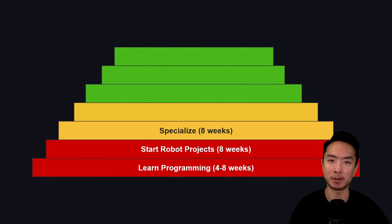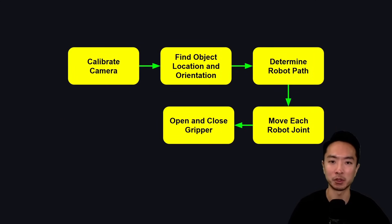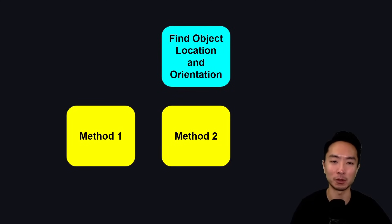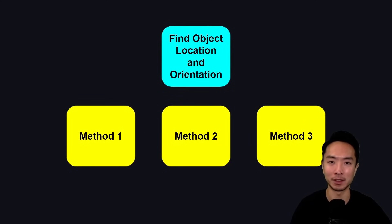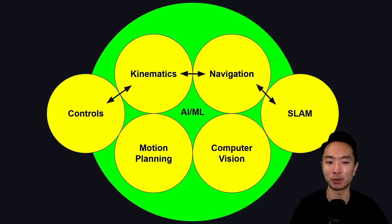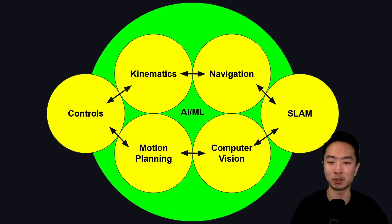The third step is to specialize. You should spend about eight weeks here. By specializing, you're able to pinpoint on one of these blocks and really understand how to approach it in different ways, developing flexibility in different methods. Many times these specializations are tied together: controls with kinematics, kinematics with navigation, navigation with SLAM, SLAM with computer vision, computer vision with motion planning, and motion planning with controls. AI and machine learning touches on pretty much all of these topics.